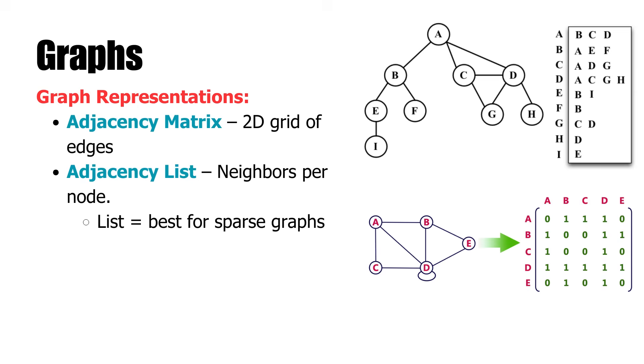Two notable graph representations exist. An adjacency matrix uses a two-dimensional grid to represent edges between nodes and is effective for dense graphs. An adjacency list, on the other hand, uses a list or dictionary in which each node represents its neighbor and is less memory-intensive for sparse graphs.